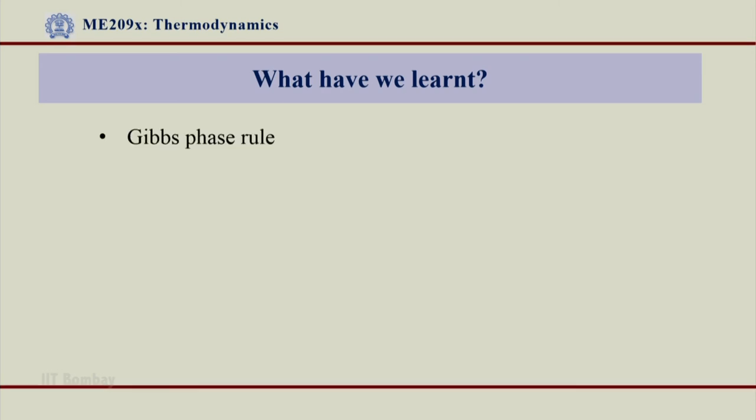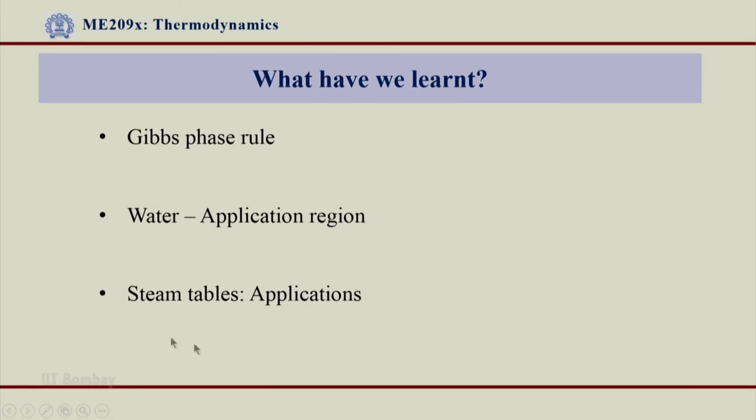What have we learnt till now? We have learnt Gibbs phase rule where degrees of freedom can be found out for a given mixture of water or phase of water. We have seen that our application region would be more in the liquid and vapor region and therefore, we will study liquid, liquid plus vapor and vapor region. And also I refer to steam tables from where we take different properties of water mixture from steam tables. For various applications that I talked about all these devices will be designed based on the property that we get from steam tables. Thank you very much.